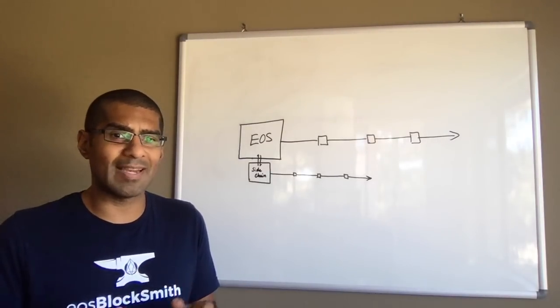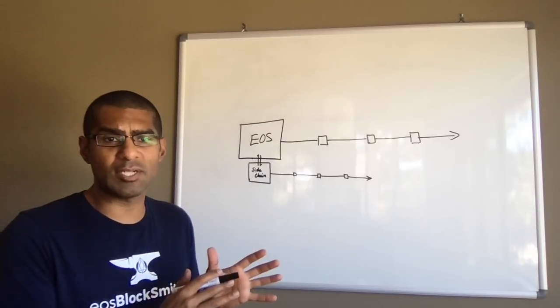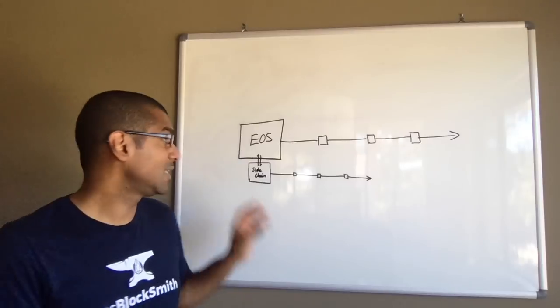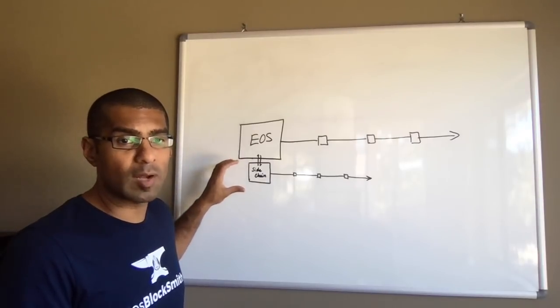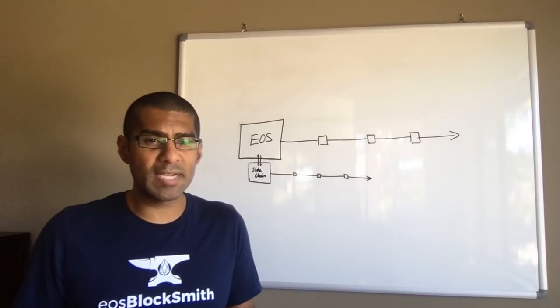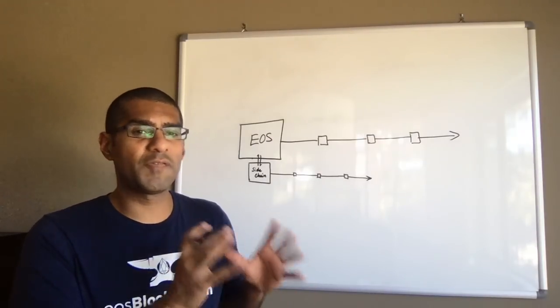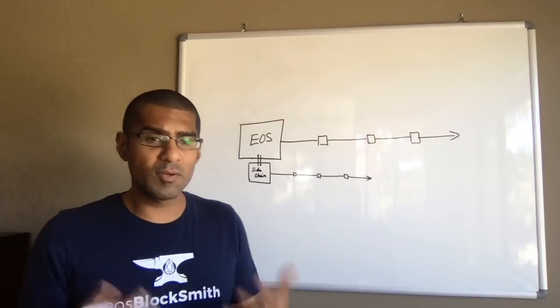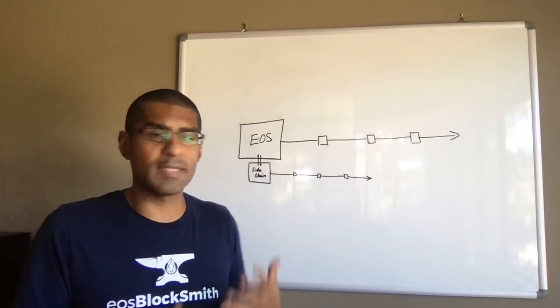There's also some other properties that need to be the case for sidechains. For example, sidechains can't have their own block producers. Sidechains have the same block producers as they're on the mainnet. What's the purpose of a sidechain? Well, despite having those fixed relationships to the EOS mainnet, there's room to change other rules on a sidechain.